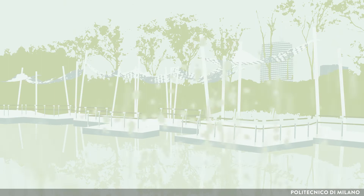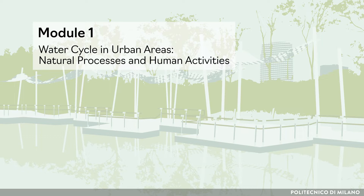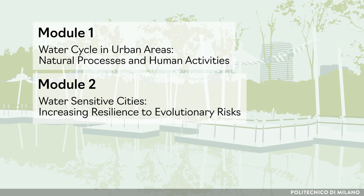This MOOC is composed of three modules. Module 1: Water Cycle in Urban Areas — Natural Processes and Human Activities. Module 2: Water Sensitive Cities — Increasing Resilience to Evolutionary Risks. Module 3: Sustainable Water Supply Strategies.